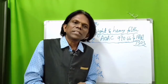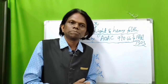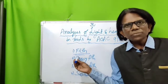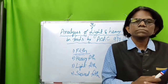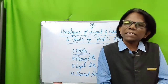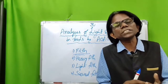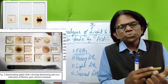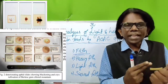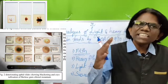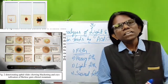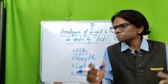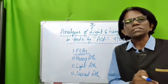Now let us start the video. Definition of filth: any objectionable matter contributed by animal contamination such as rodents, cockroach, flies, birds, etc., or any objectionable matter contaminated by unsanitary conditions — that is also called filth.